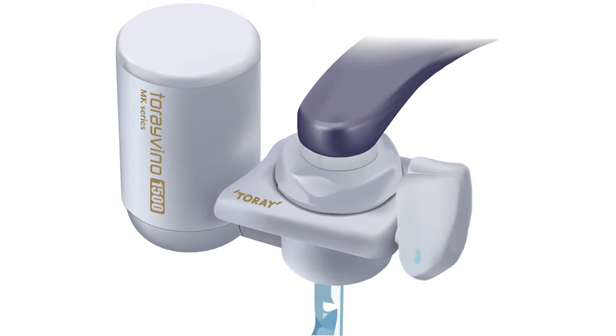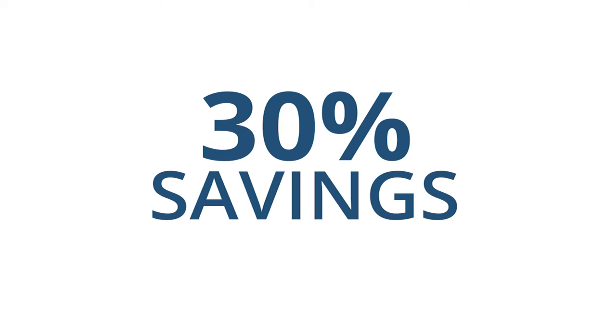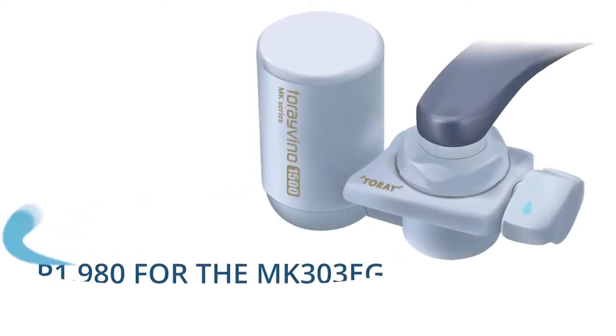And if that isn't enough, when the Tori Vino is on unfiltered spray mode, you get 30% savings on your water consumption. That's a sweet deal.